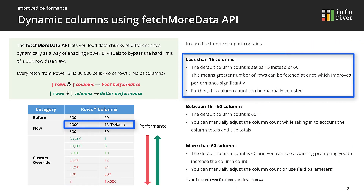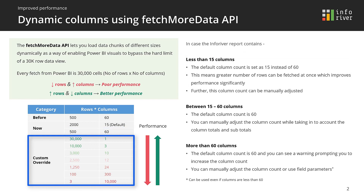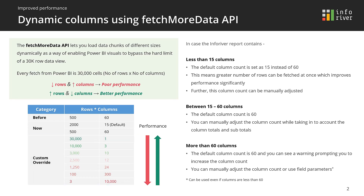If you have less than 15 columns added to the visual, the column count is set to 15 by default. This means that InfoRiver can now fetch four times the initial rows versus the original default column count of 60. You can also manually adjust this column count to the exact number of columns you'll need, including subtotals, in the visual. This will automatically enhance performance for existing InfoRiver reports.